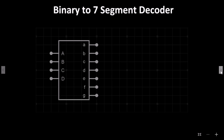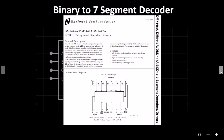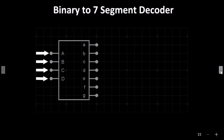The Binary to 7 Segment Decoder is based on the 7447 IC or similar. It has four inputs, which are labelled A, B, C and D. These correspond to binary values for 1, 2, 4 and 8. We can send a signal to 1, 2, 3, or all four inputs together and it will add the values.